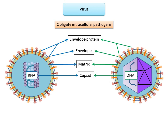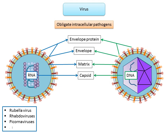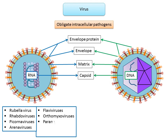Examples of RNA viruses and the diseases they cause include: rubella virus which causes German measles; rhabdoviruses which cause rabies; picornaviruses which cause poliomyelitis, meningitis, colds and hepatitis A; arenaviruses which cause meningitis and Lassa fever; flaviviruses which cause West Nile meningoencephalitis, yellow fever and hepatitis C; orthomyxoviruses which cause influenza; paramyxoviruses responsible for measles and mumps; and coronaviruses which cause colds and severe acute respiratory syndrome.